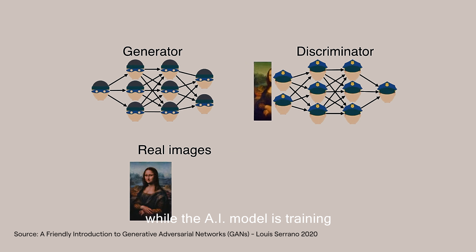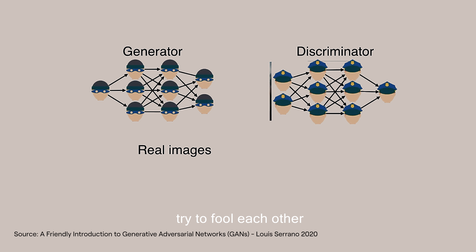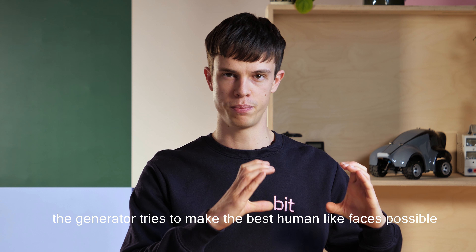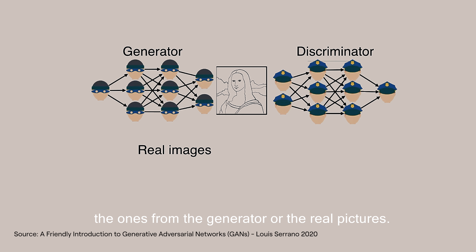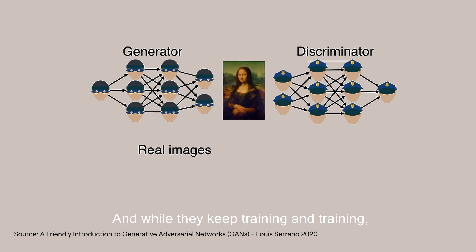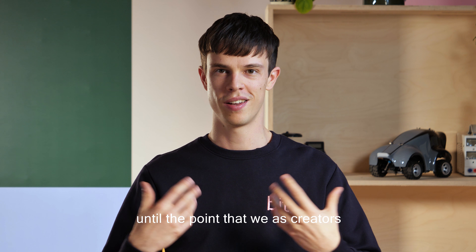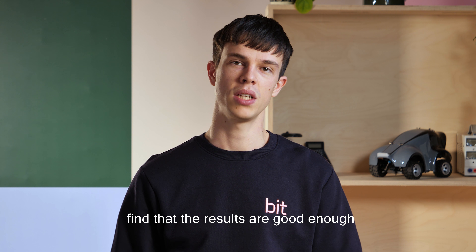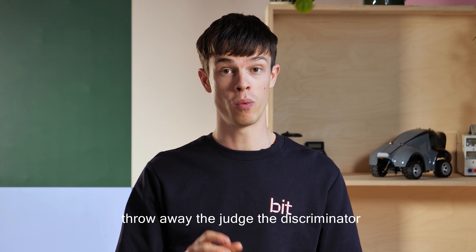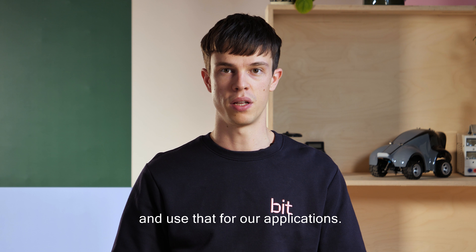While the AI model is training, both the generator and the discriminator try to fool each other. The generator tries to make the best human-like faces possible, and the discriminator gets better at detecting the generated ones from the real pictures. While they keep training, they get better and better at their jobs, until we as creators find the results are good enough, stop the training process, discard the discriminator, and keep just the generative part for our applications.